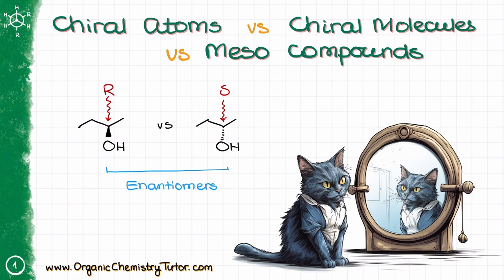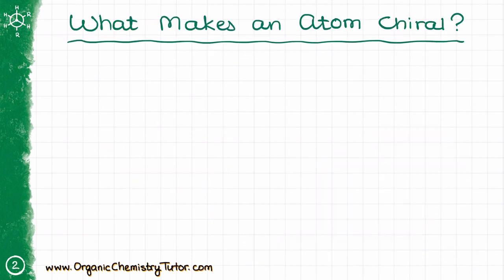Here is something very important: the entire molecule can be chiral, or just an atom in a molecule can be chiral. So what exactly makes an atom chiral? If an atom has four different groups attached to it, we can call that atom chiral, as long as the atom is sp3 hybridized. Notice that it doesn't have to be a carbon atom at all — other atoms like nitrogen, sulfur, or phosphorus can be chiral as well.